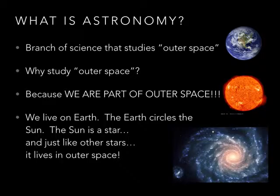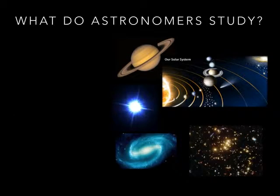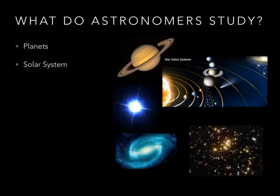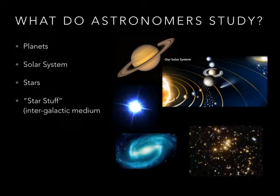So the big reason we want to study space is because we're in outer space. What kind of stuff do astronomers study? Well, they study planets — like Saturn right there. They study galaxies. They study stars. They study the solar system.